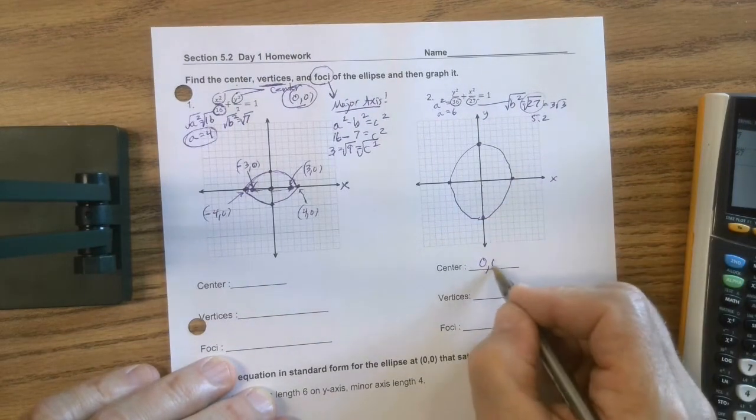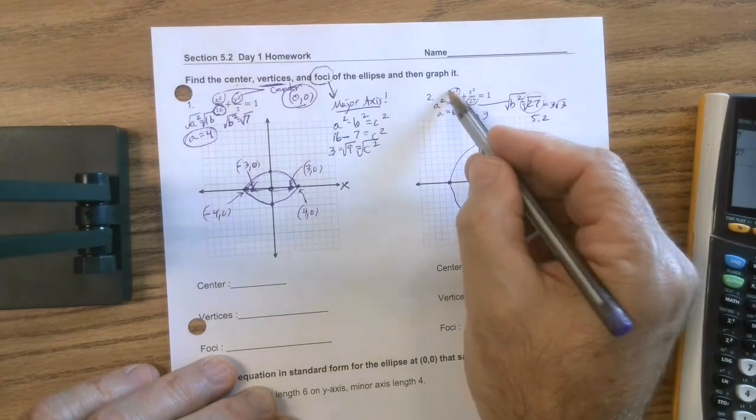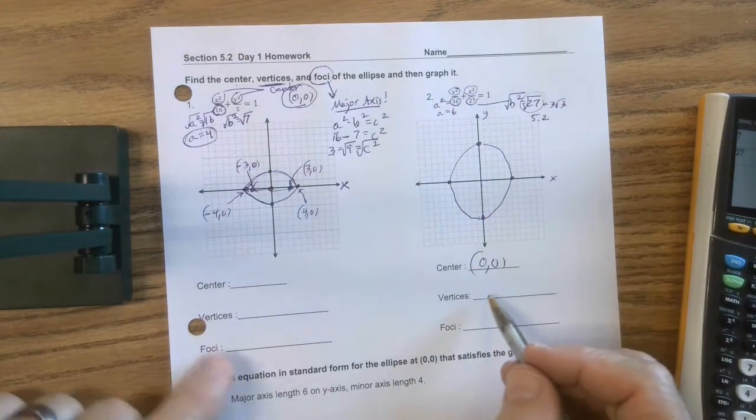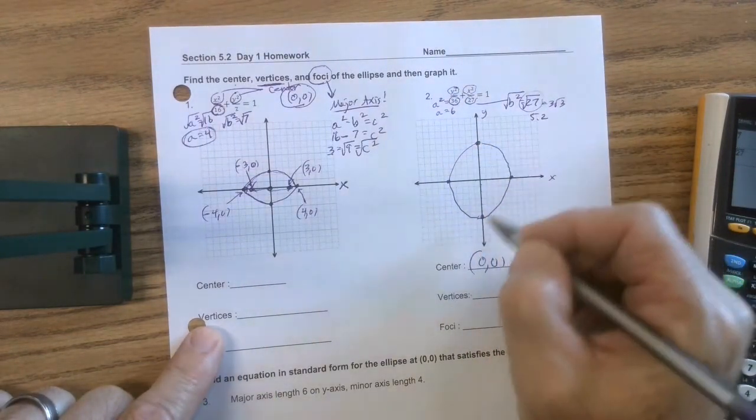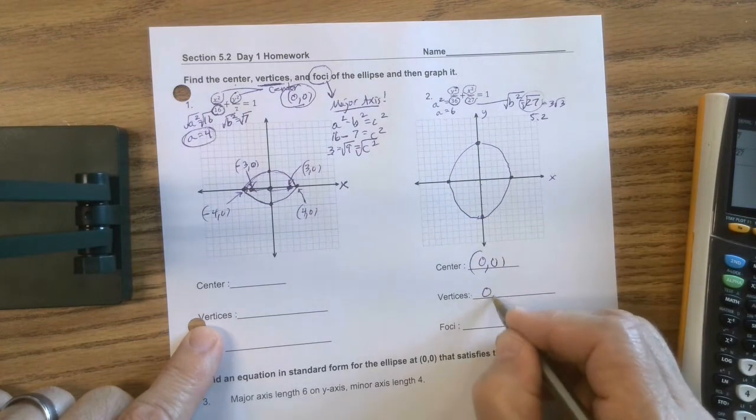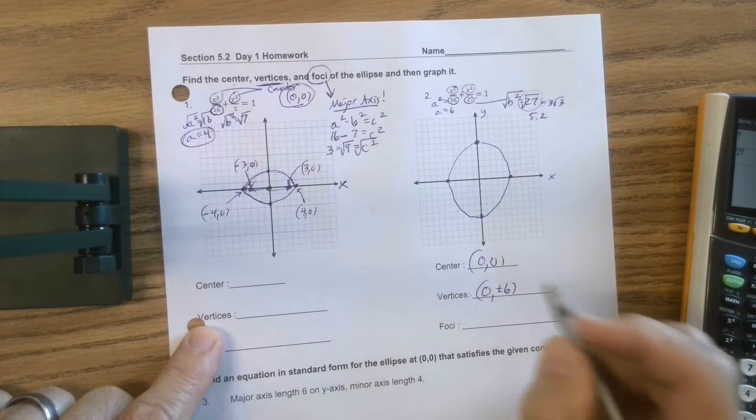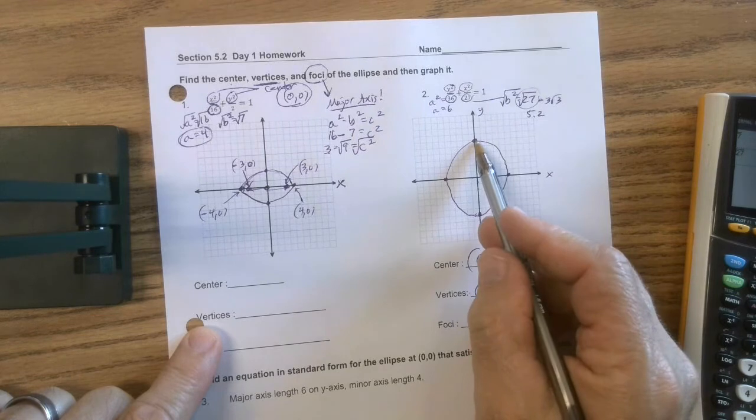Now, center. We know it's 0, 0 because there's no shift, no shift. Vertices. Well that's going to be 0, 6 and 0, negative 6. So 0 plus or minus 6. Remember, those are the endpoints of the major axis.